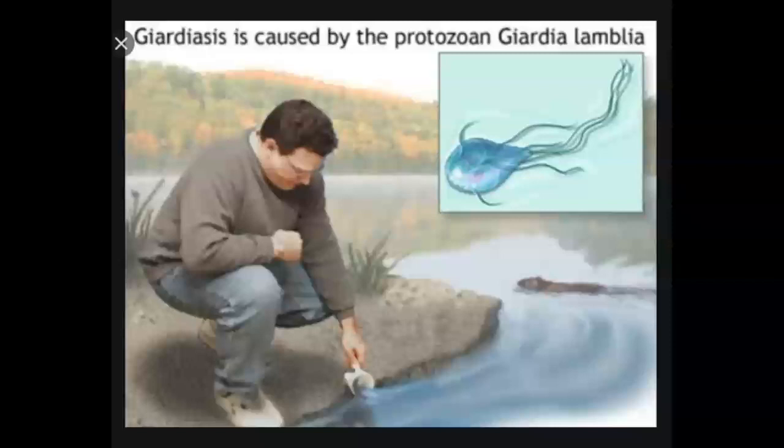Giardia lamblia is a protozoal parasite that causes superficial invasion, destruction, and inflammation of the mucosa of the small intestine. This organism occurs in cysts and trophozoites. Trophozoites die rapidly after leaving the body in the stool, but cysts can remain alive in the right type of environment for weeks to months. Humans who eliminate cysts are infectious. Flies can spread the cysts, and the problem is more common in areas that use human excrement for fertilizer.